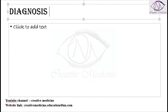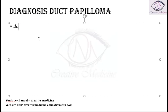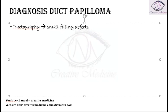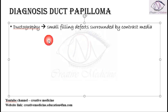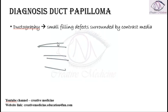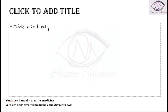Diagnosis of ductal papilloma is done by ductography. In ductography, small filling defects are seen, surrounded by contrast media. We inject contrast inside the ducts — wherever a papilloma is present in the duct, the contrast cannot flow through it, so small filling defects are seen at that site.